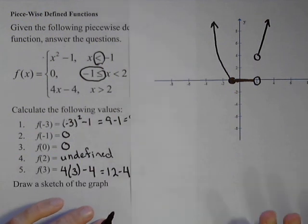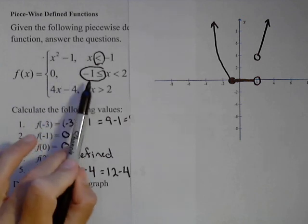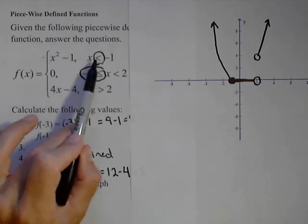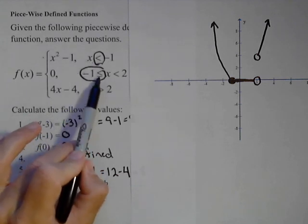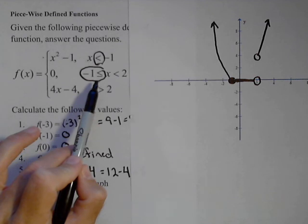And that's a rough sketch of our graph and how we can graph a piecewise defined function. What we do is we look at each piece. Always do the endpoint first. If it's strict inequality, give it an open circle. If it's less than or equal to or greater than or equal to, you give it a closed circle.